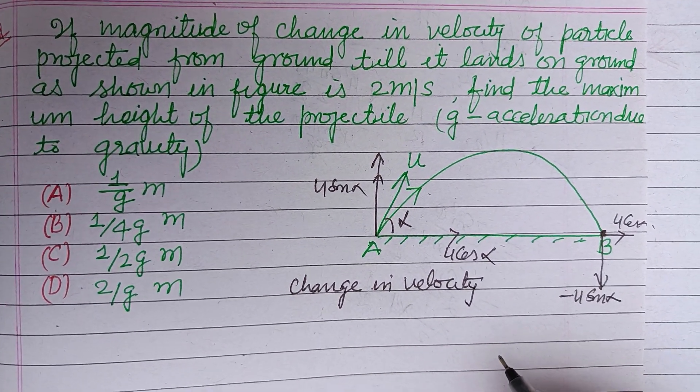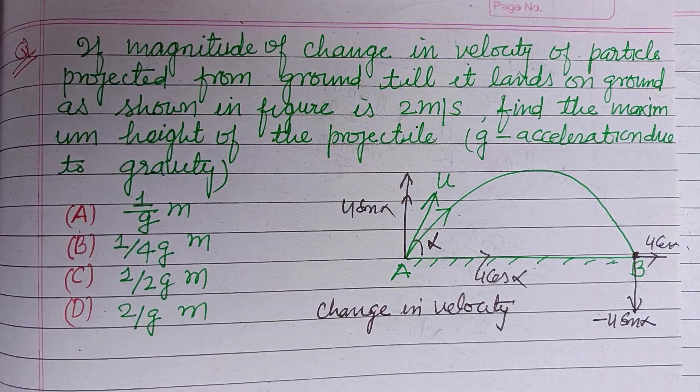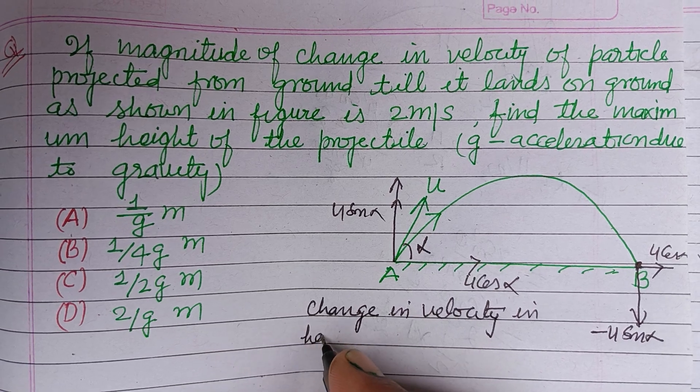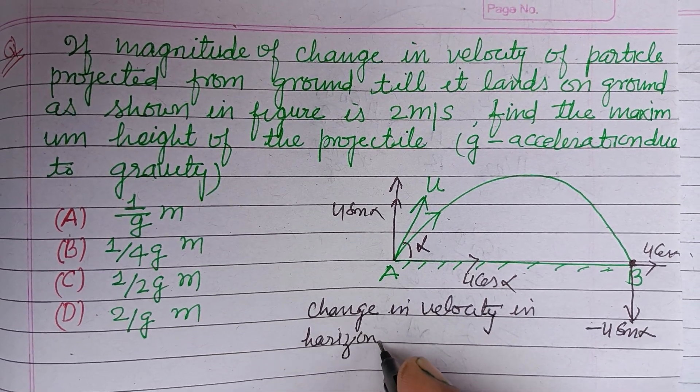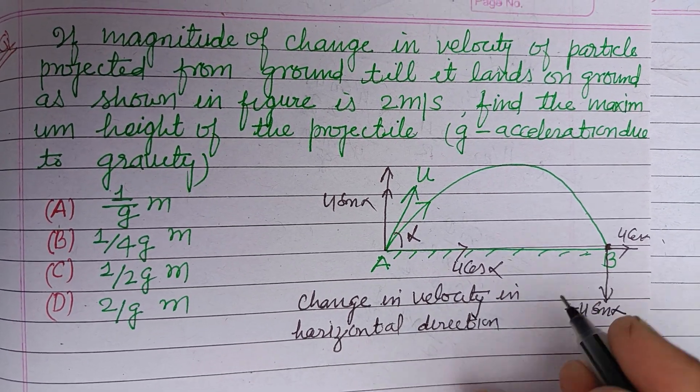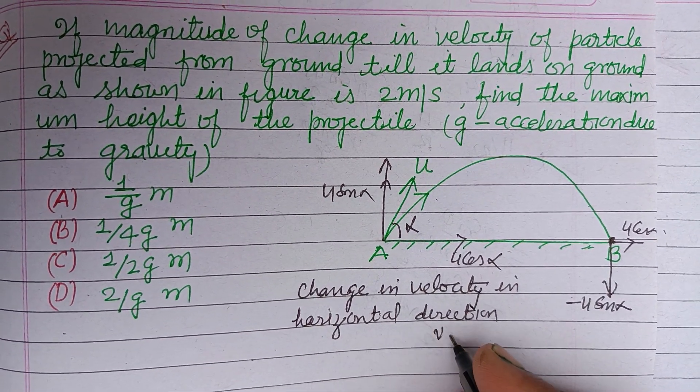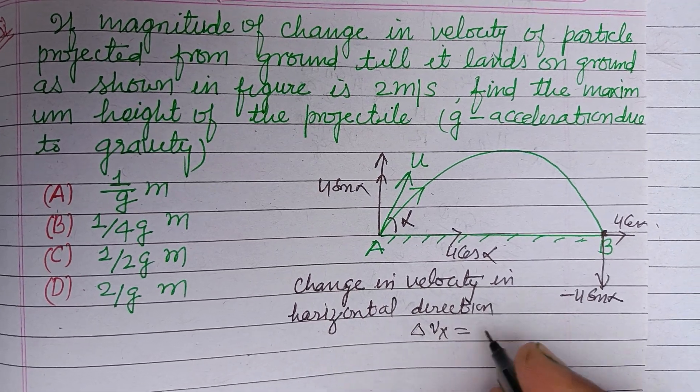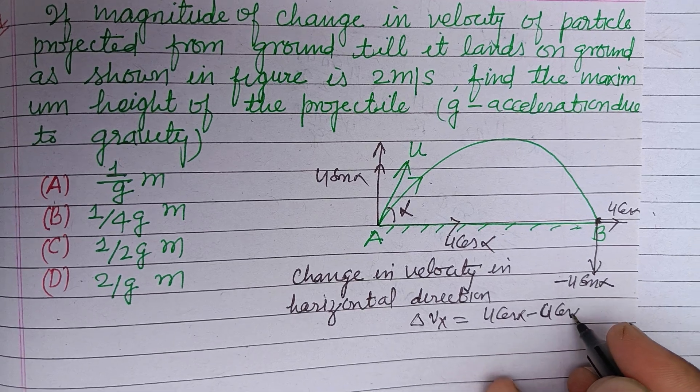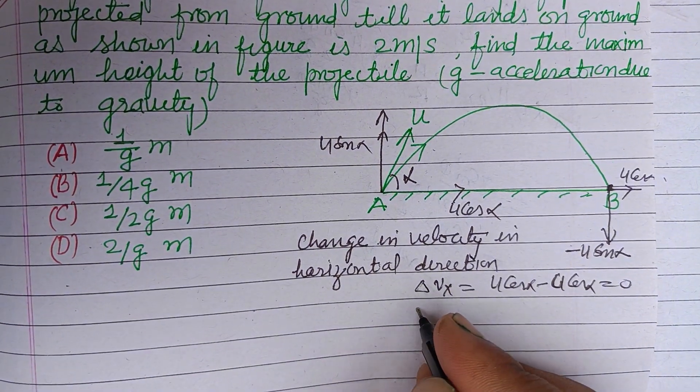In horizontal direction, del Vx equals u cos alpha minus u cos alpha, that is 0.